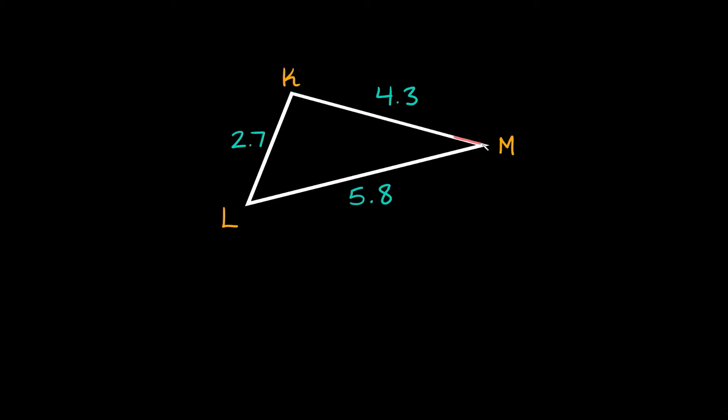So for instance here we have angle M. It's like a little mouth. Now if you extend this part of the mouth you can see that it's basically gonna try and eat this side of the triangle. This short little side which is 2.7. So that means angle M opens up to 2.7 which we can see is the shortest side. So angle M would be the smallest angle.